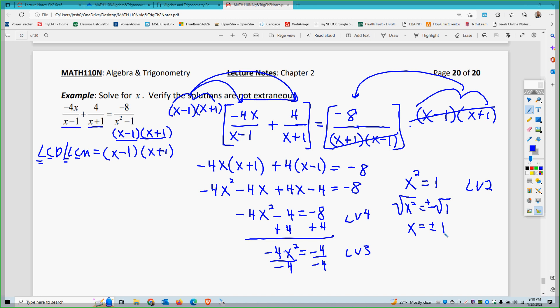If you look back at the original problem, if I plug in 1 or negative 1, I'll get zero denominators. That means neither one of those are solutions. Those are both extraneous. It's actually an empty set. There's no solution to this actual problem.